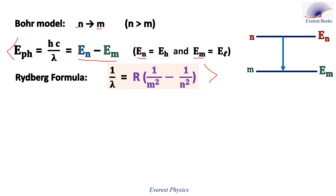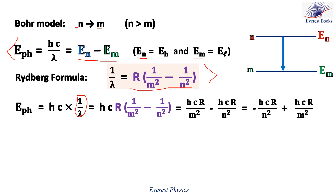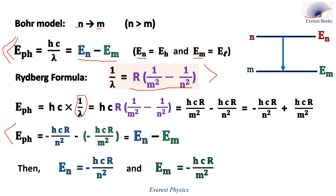Now let's use these equations to determine the energy of these levels. First, the energy of the photon can be written as hc times 1 over lambda. Replacing 1 over lambda with its expression from the Rydberg formula, you get hcR over m squared minus hcR over n squared, which equals minus hcR over n squared plus hcR over m squared.